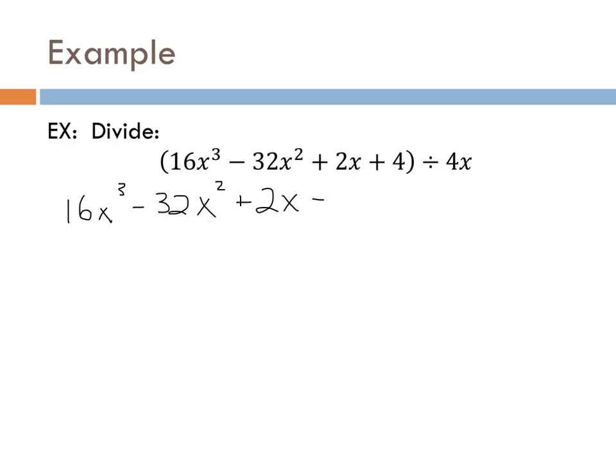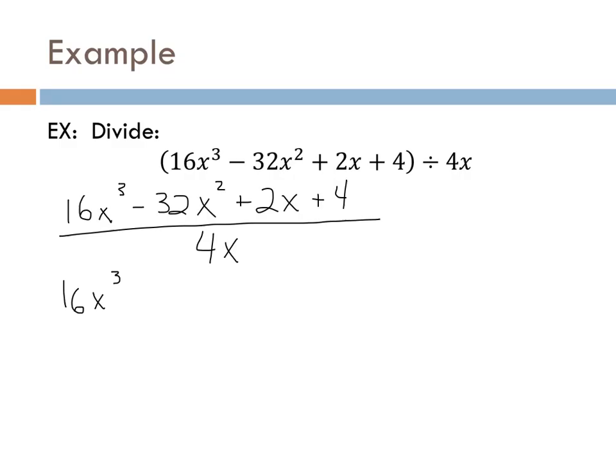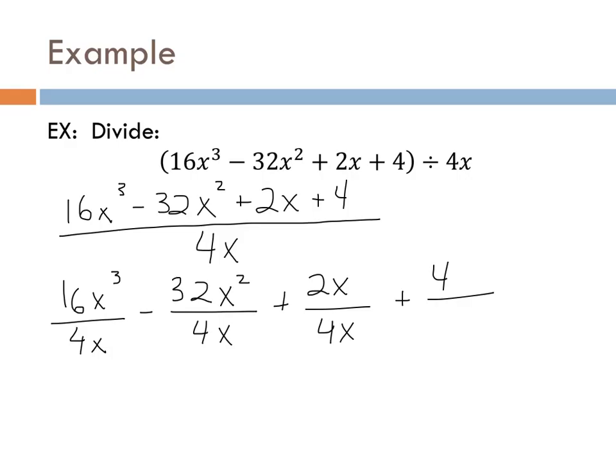The first thing you should do is write this in vertical format so it looks like a fraction, so you can see exactly how it breaks down into smaller chunks. We're going to have 16x³ minus 32x² plus 2x plus 4, all divided by 4x. Once you feel comfortable with these, you can skip right down to writing the four separate fractions, but for now we're going to write every step.